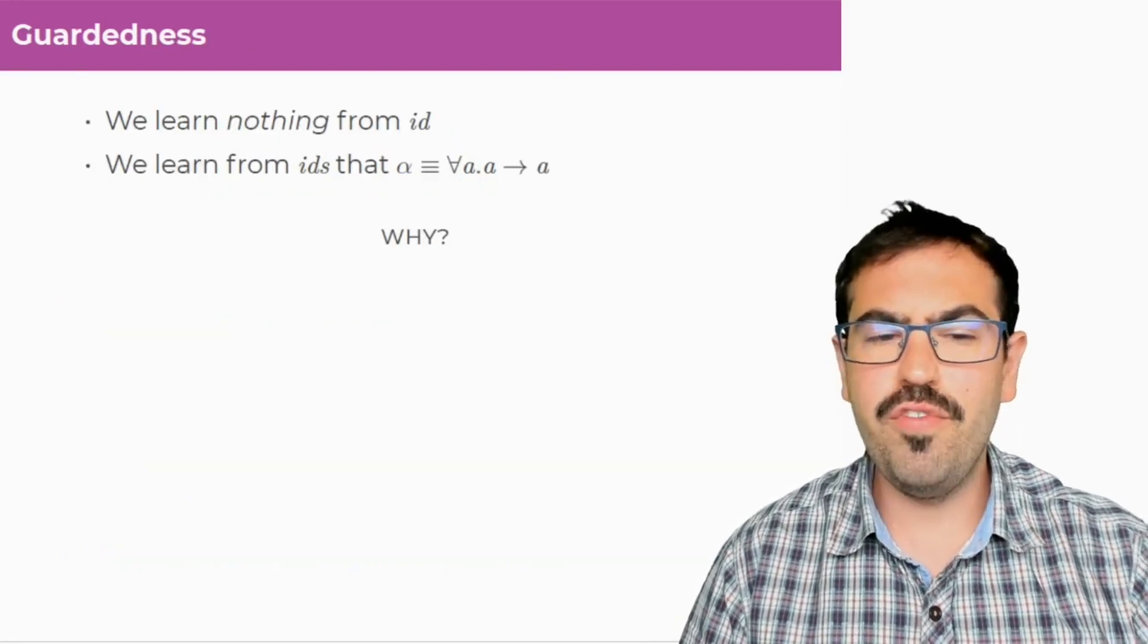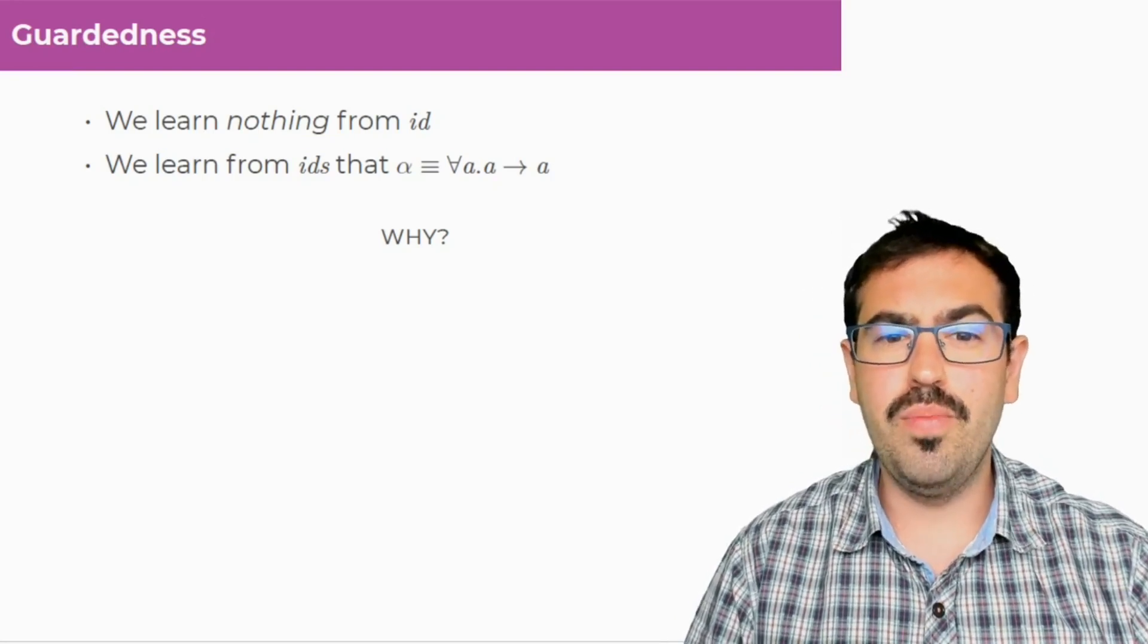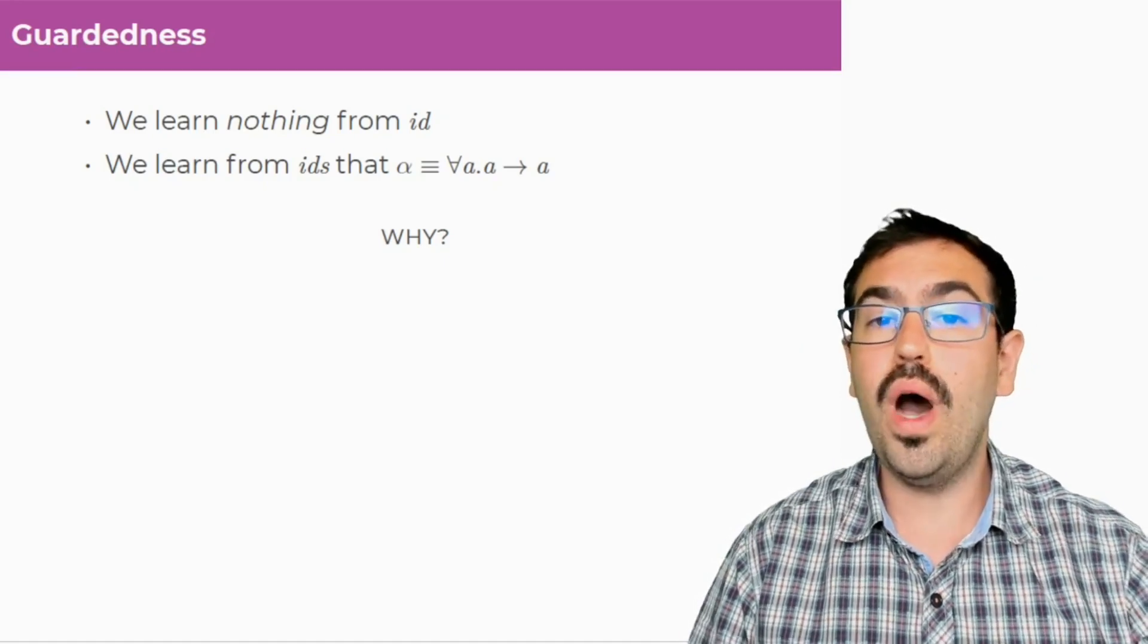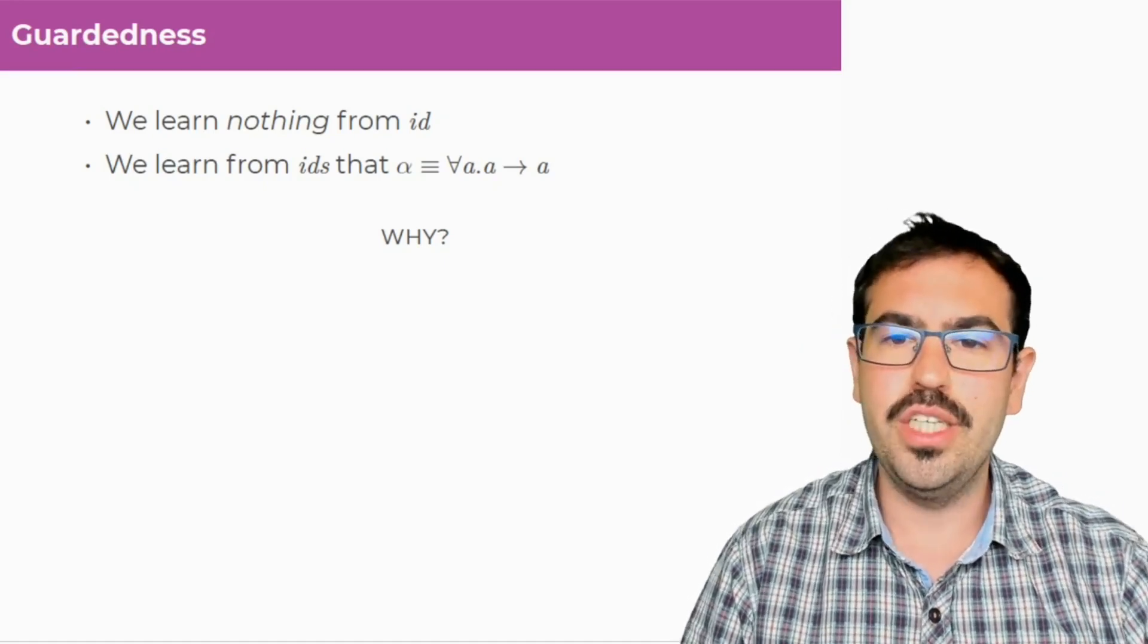Now, I've said that we learn nothing from ID, but from IDs we learn that alpha must be for all A dot A to A, so you might be wondering what's the difference between these two arguments.